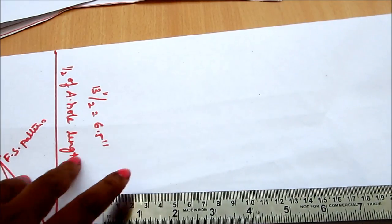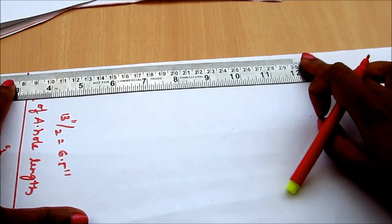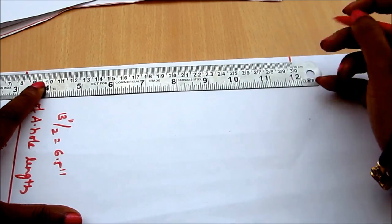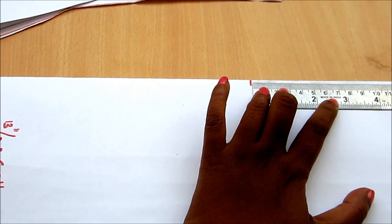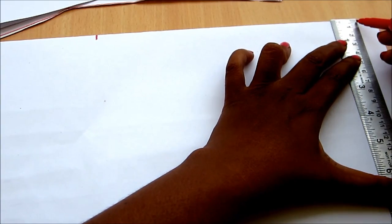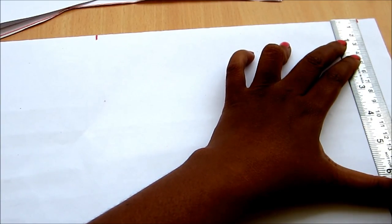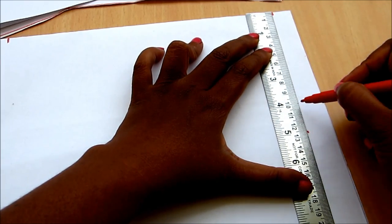Till the wrist length, elbow length, or the short sleeve, depends upon the length how much you required the sleeve. This I'd be marking for the long sleeve which is of wrist length of 21 inches.